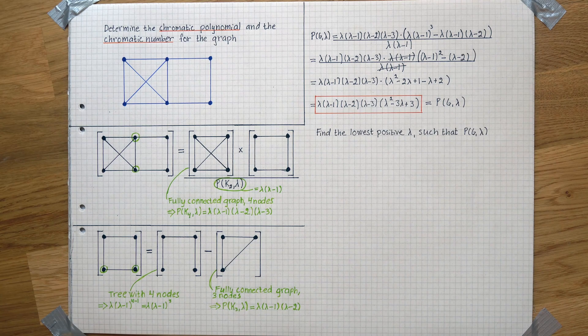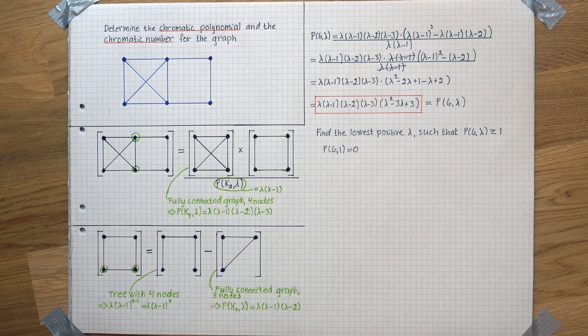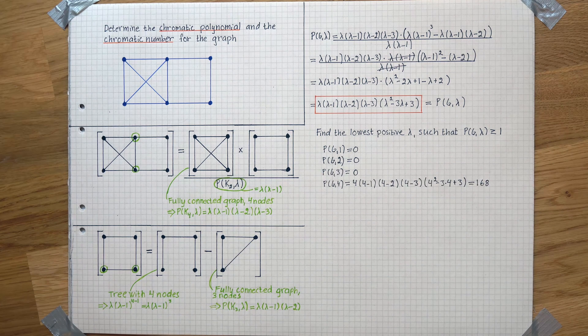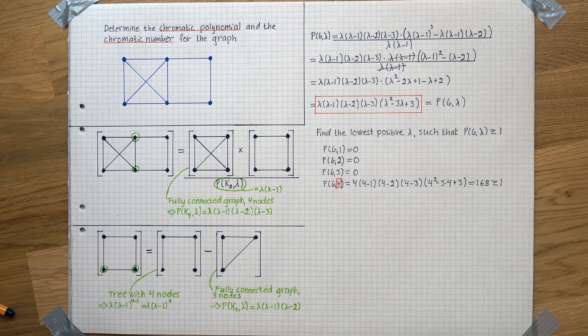And now we'll run some tests to determine the lowest positive lambda such that the chromatic polynomial is greater than or equal to 1. One, two, and three are no good. But four, on the other hand, is greater than 1, and therefore four is our chromatic number.